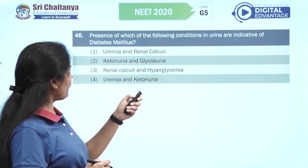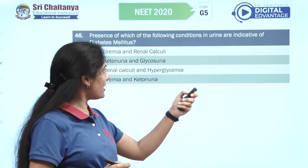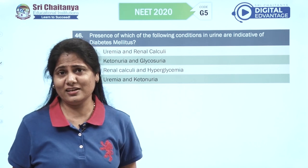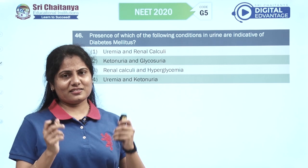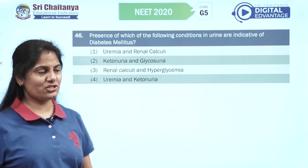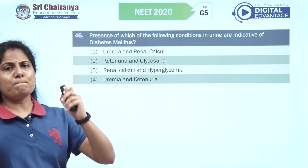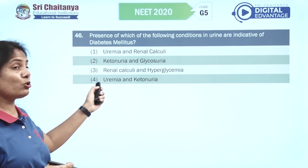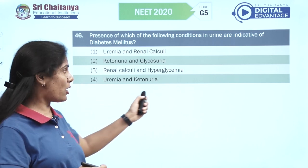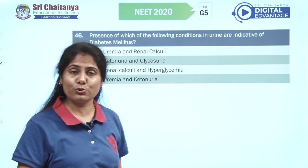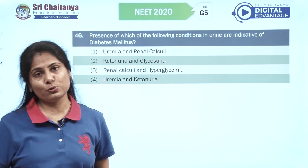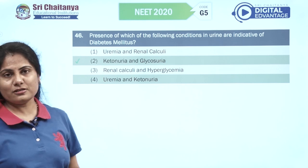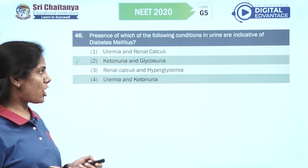Presence of which conditions in urine are indicative of diabetes mellitus? Ketonuria — presence of ketone bodies in urine — and glycosuria — presence of glucose in urine. The second option is your right option.